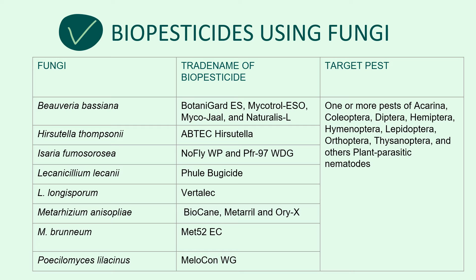The tables below show the biopesticides derived using various fungi species and they consist of a wide range of target pests. For example, one or more pests of Acarina, Coleoptera, Diptera, Hemiptera, Hymenoptera, Lepidoptera, Orthoptera, Thysanoptera, and other plant-parasitic nematodes.